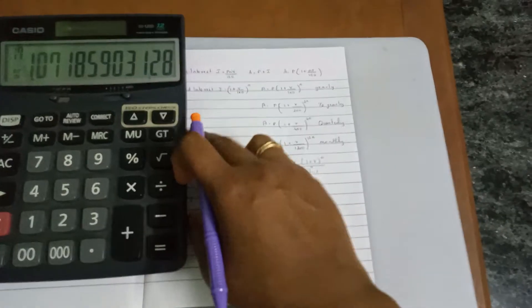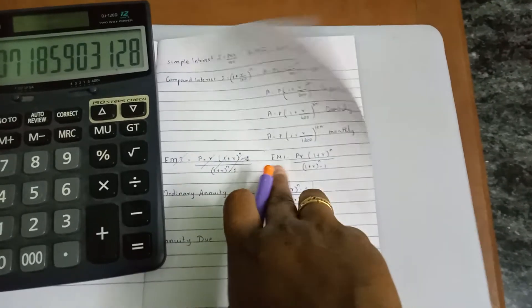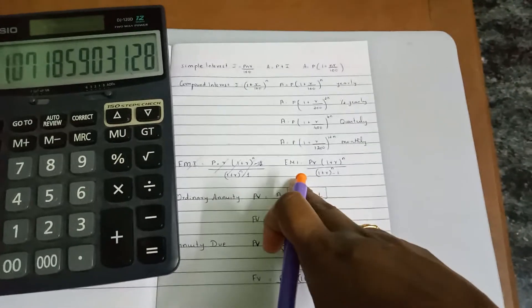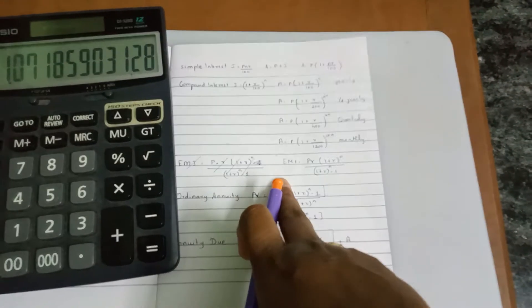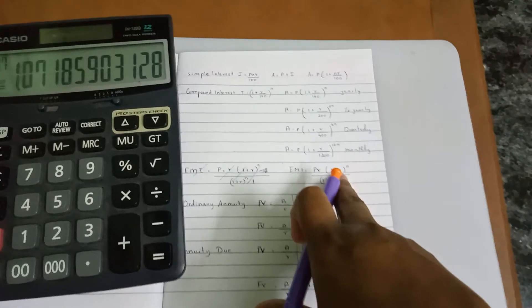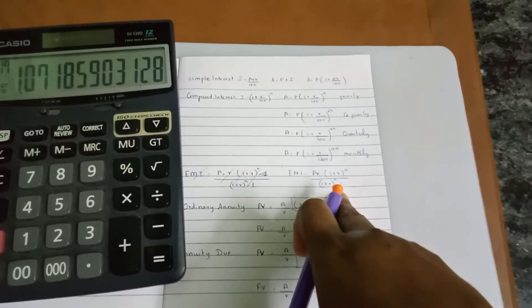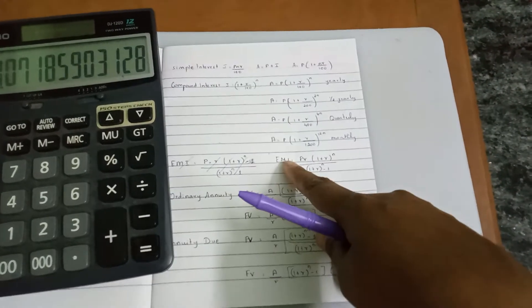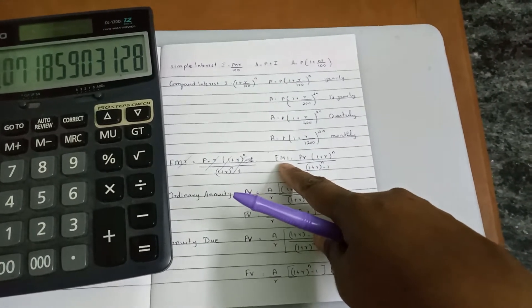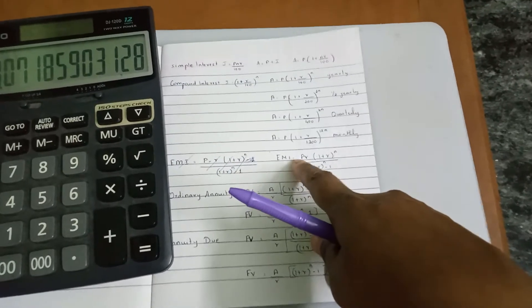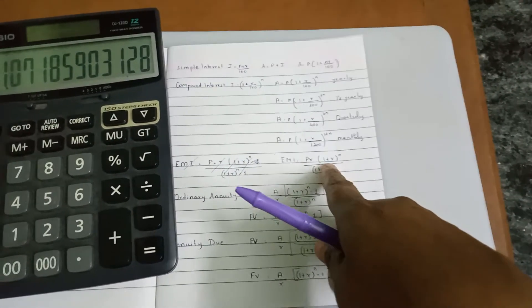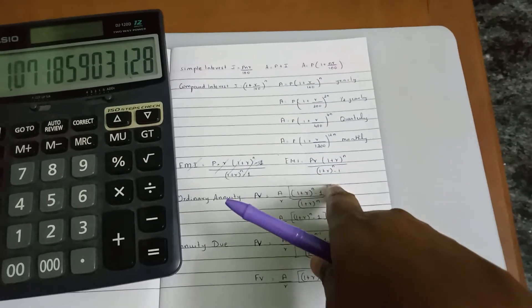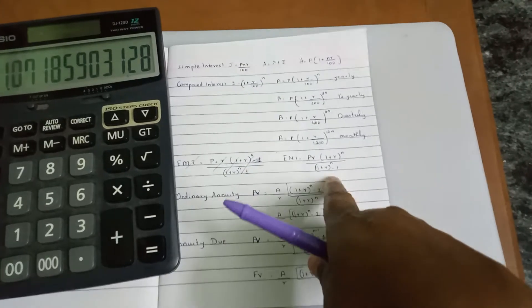The next formula is EMI. If you have a loan, you will get the initial investment amount, and monthly you will make a regular payment at regular intervals. This is annuity, same procedure. Here is monthly regular payment: P times rate times (1 plus R) to the power n divided by (1 plus R) to the power n minus 1. The value is less than 1, so we do minus 1.